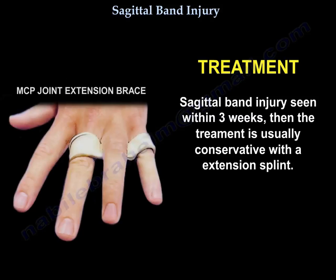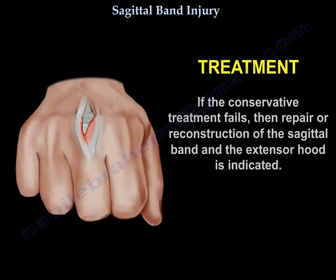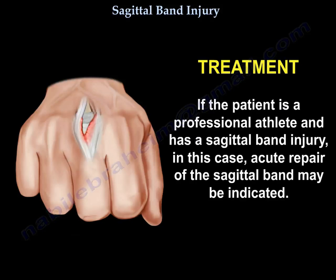You can see here an example of the splint that can be used. If conservative treatment fails, then repair or reconstruction of the sagittal band and extensor hood is indicated. If the patient is a professional athlete and has a sagittal band injury, acute repair of the sagittal band may be indicated.